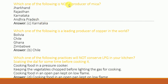Which one of the following is not a producer of Mica? Jharkhand, Rajasthan, Karnataka, and Andhra Pradesh. The answer is Karnataka.